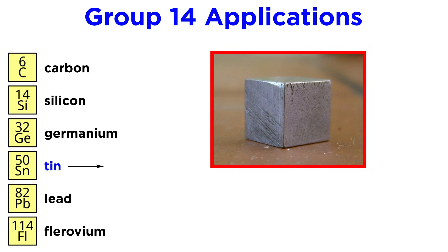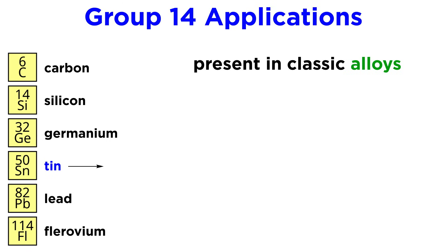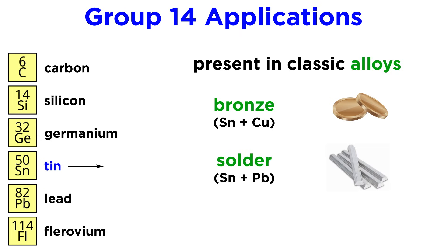Tin is an interesting metal, as it is non-toxic, does not rust, and is very easy to melt and cast. Tin is present in some of the most classic alloys, such as bronze, an alloy of tin and copper, solder, an alloy of tin and lead, and pewter, an alloy of predominantly tin and mixtures of other metals like silver, copper, zinc, and manganese.